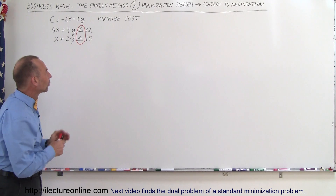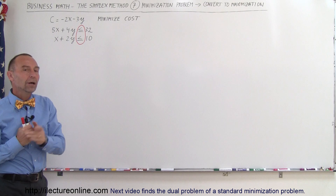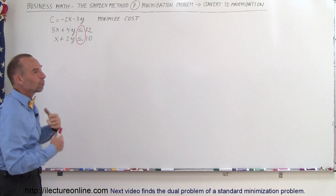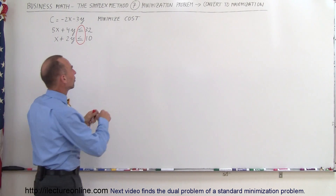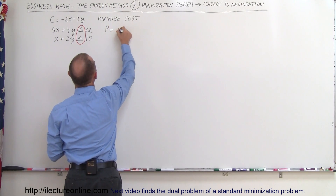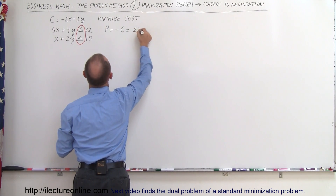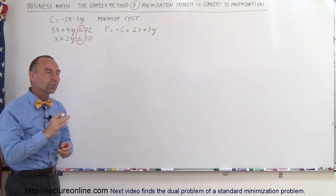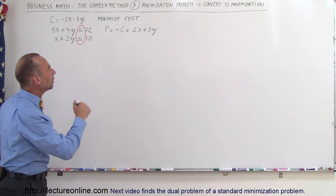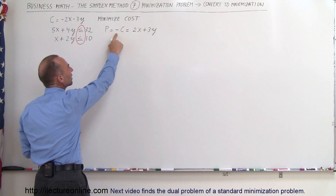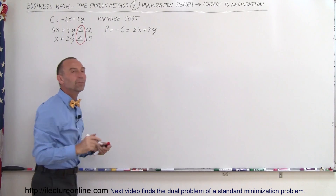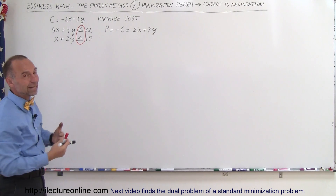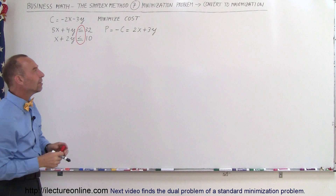So what we're going to do here is solve it like a maximization problem. What we need to do is find the comparable profit function, because the profit is the negative of the cost. So we know that p equals minus c, therefore equal to 2x plus 3y. We're going to find the equivalent maximization problem, and once we find the profit, the negative of that will be the cost for the minimization problem. That's not a standard way of doing minimization problems, but you may run into this, so you need to know how to do it.